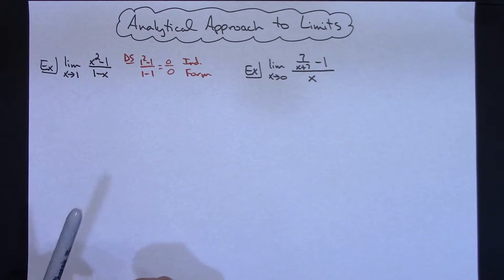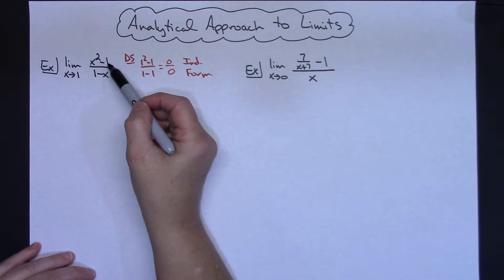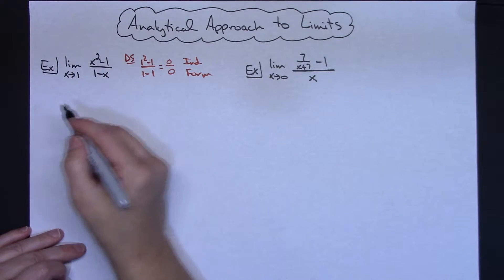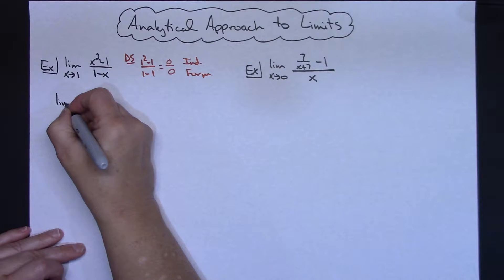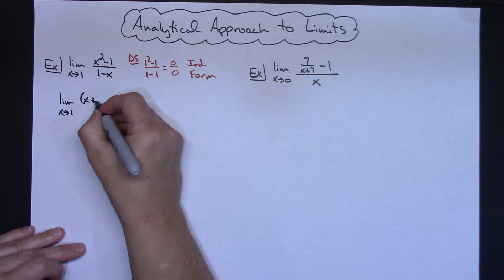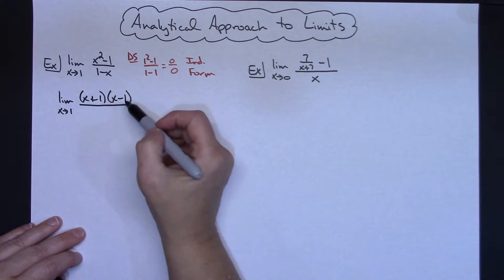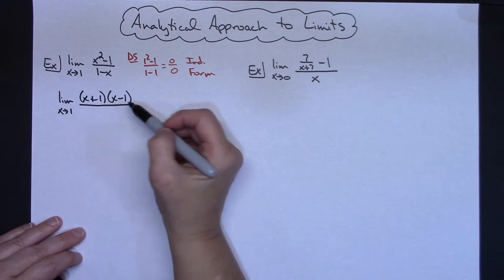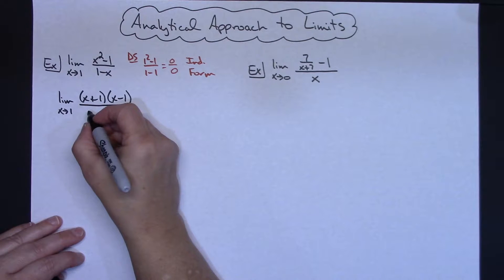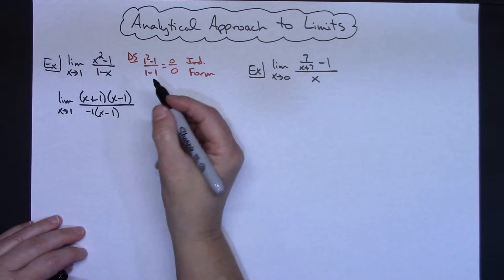Looking at what I've got: on top I've got x squared minus 1, which is the difference of two squares, so I'm going to factor that numerator into x plus 1 times x minus 1. Then I look at the denominator, 1 minus x, which is very close to x minus 1 — the signs are just switched. So I factor out a negative 1 from the denominator so I can write it as negative 1 times x minus 1, and those terms now match.